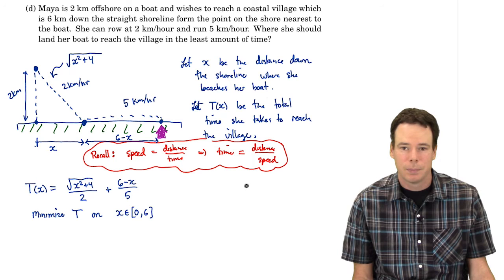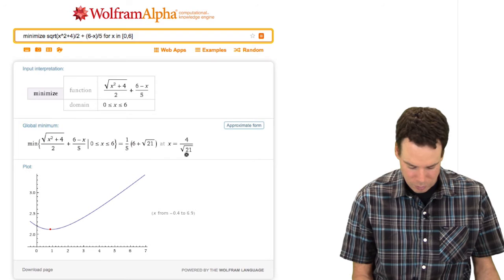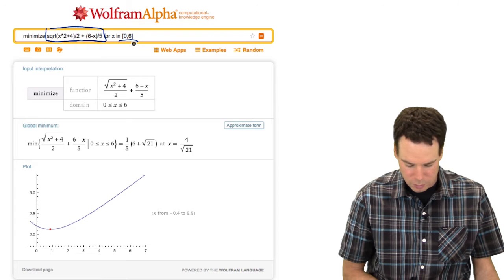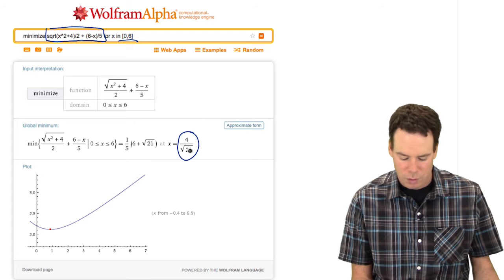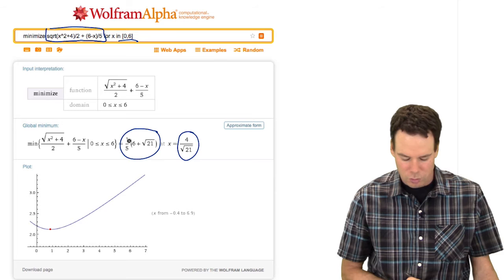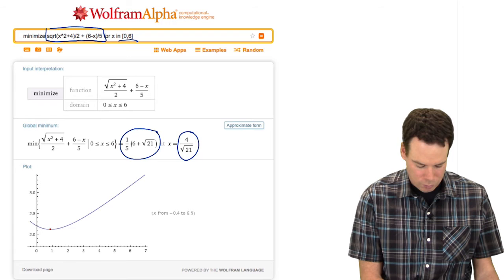That's what we want to do. We want to minimize this function on this interval. Again this is the pre-calculus setup. Now we've got our function. We want to optimize it. Now we want to jump right to the result. Well we can just ask Wolfram Alpha. Minimize this function on this interval. And it comes back saying there's where she should stop along the shoreline. 4 over square root of 21 kilometers down the shoreline. And this would be the total time of her trip then. That would be the minimum value.